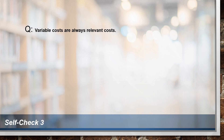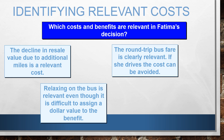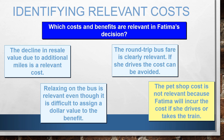Self-check number 4: Variable costs are always relevant costs. True or false? The decline in resale value is relevant because it is incurred with additional miles driven. The round-trip bus fare is relevant because it is avoidable if she drives her car. Relaxing on the bus is relevant but difficult to quantify. The pet shop cost is not relevant because it is not a differential cost — whether you take the bus or drive, since you are traveling, you will incur the pet shop cost either way.